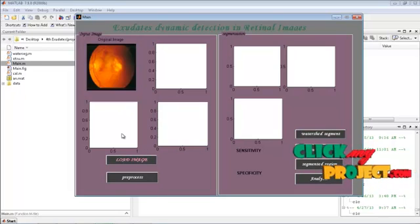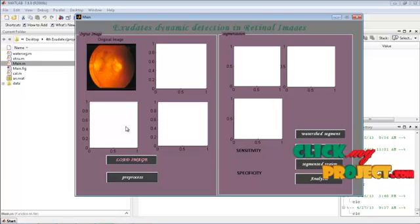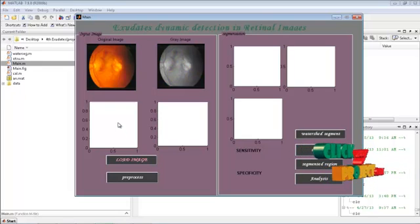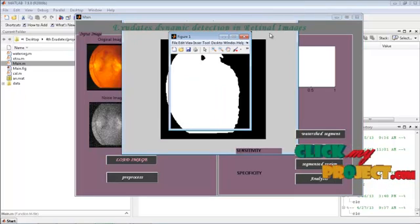Next is preprocessing. Preprocessing is the noise removal process. Morphological operations will be applied for noise removal image. Noise map distributions will be applied to these input images.